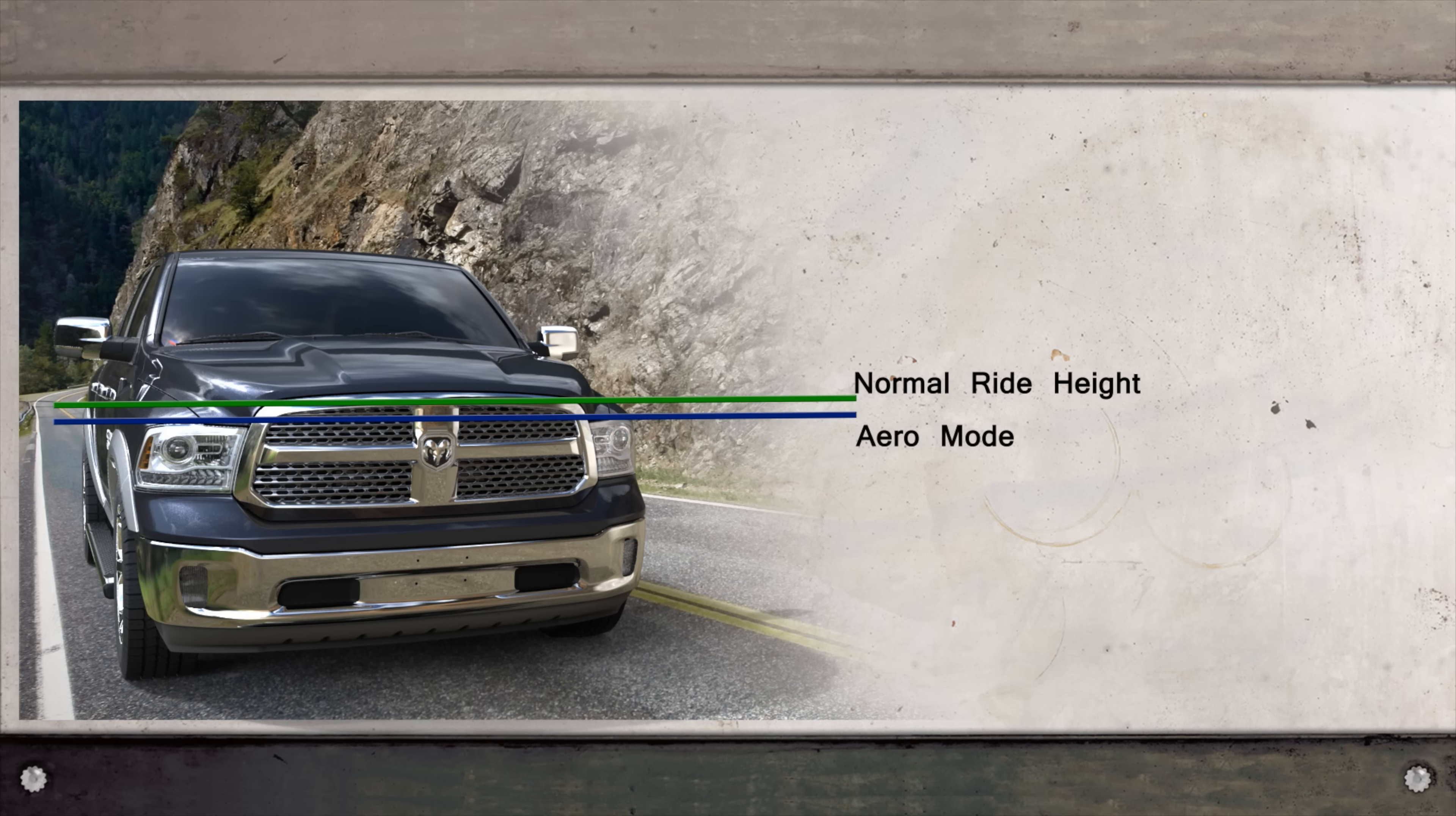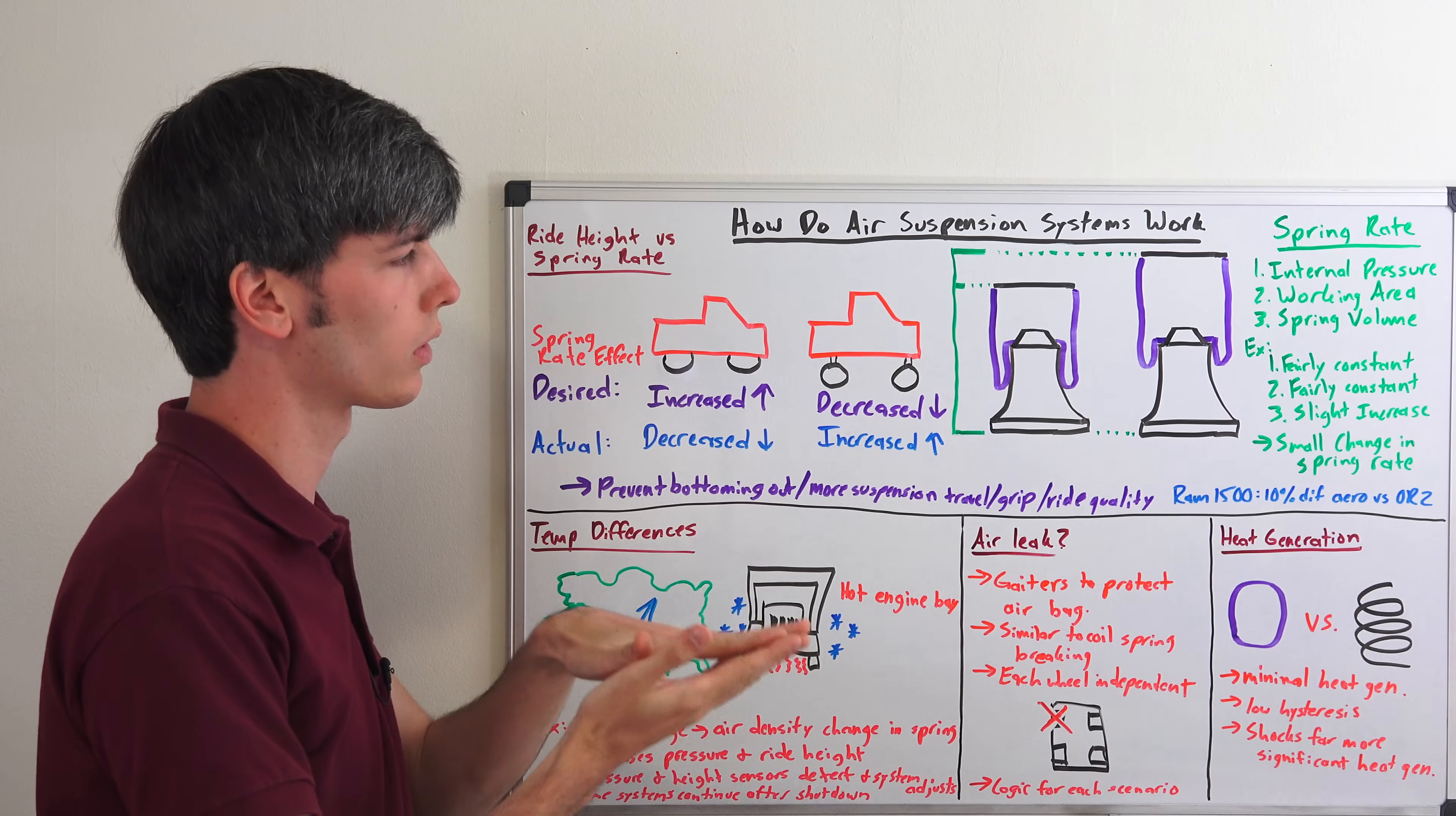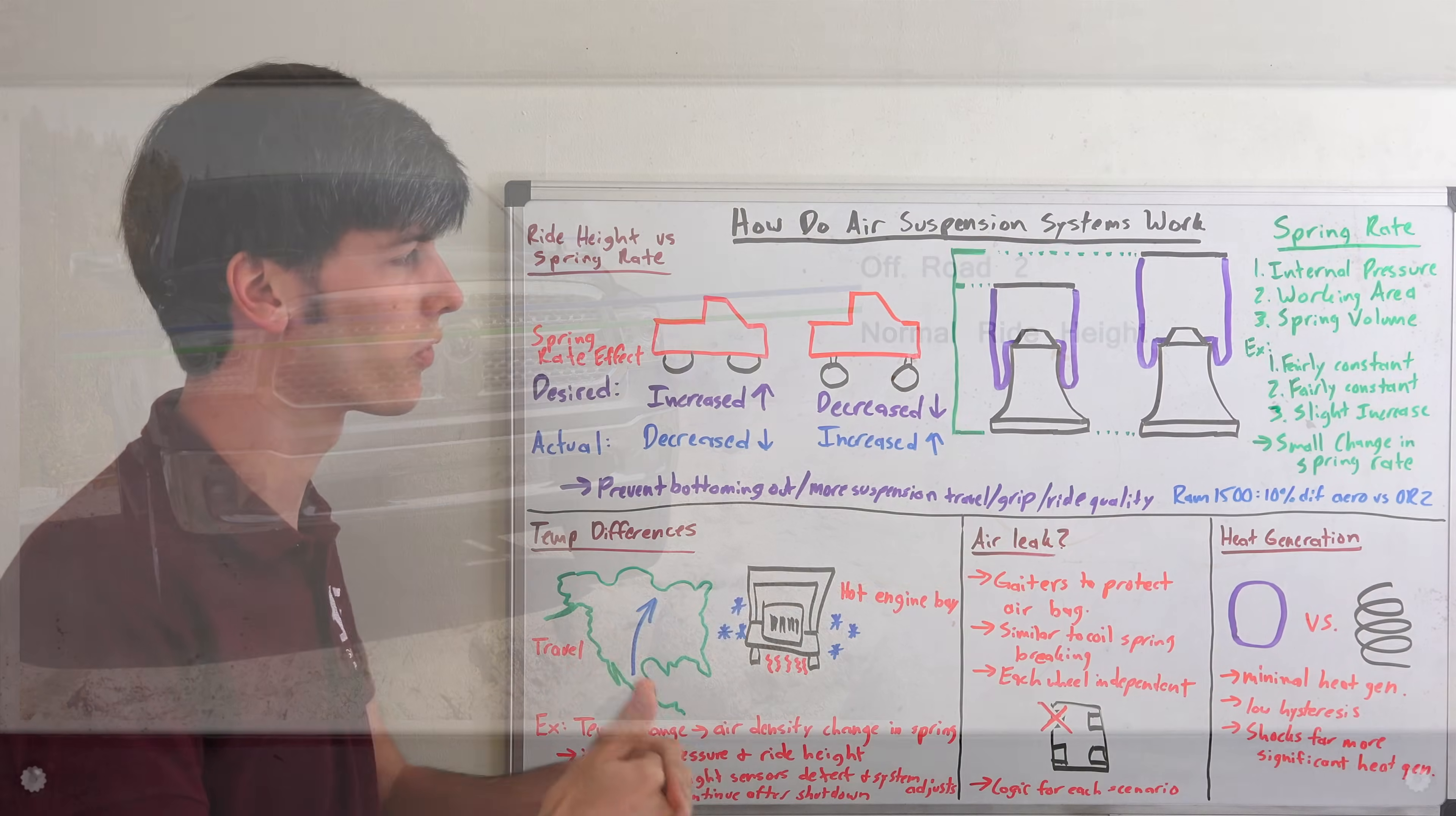So what I found very interesting asking the Ram engineers is, what's the difference in spring rate between your Ram 1500 at its lowest ride height setting for driving, which would be when it is in its aerodynamic mode so it lowers down for less drag, versus its highest driving setting which would be off-road 2, so it raises up significantly for off-road 2 mode.